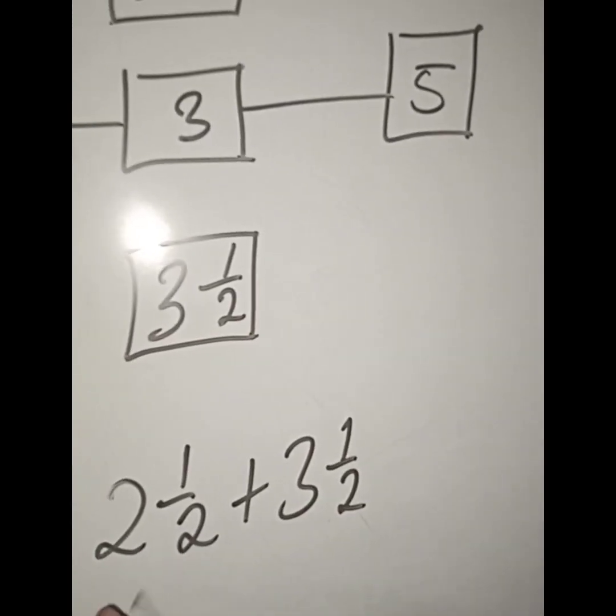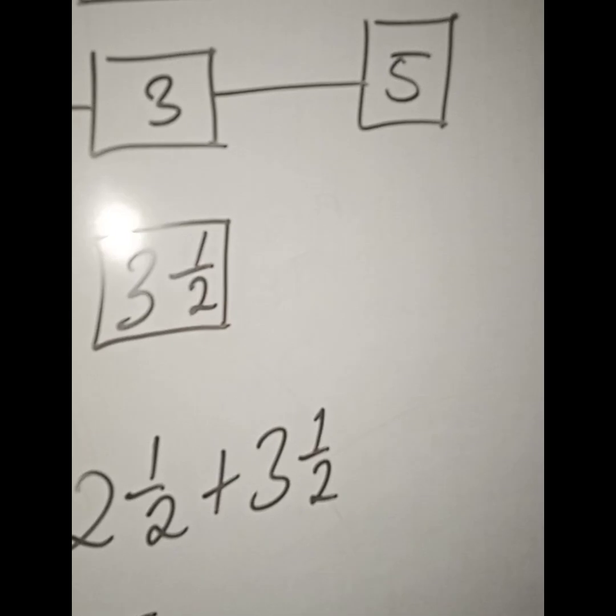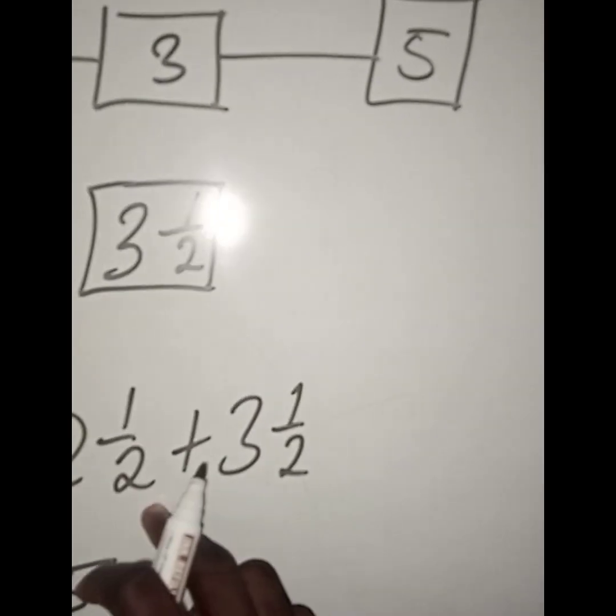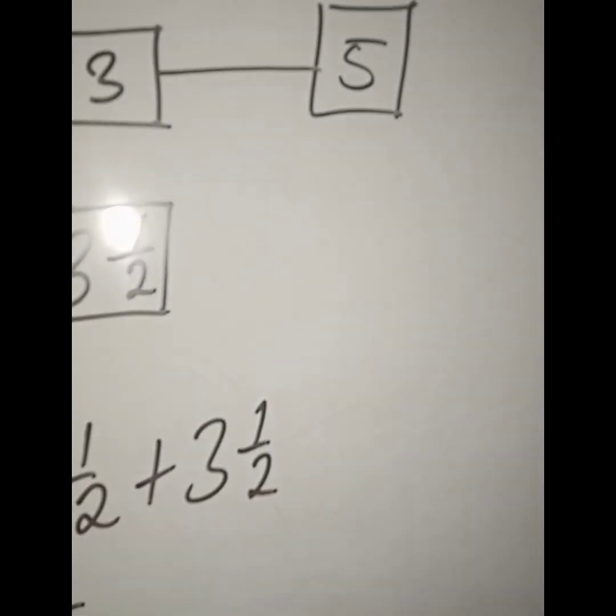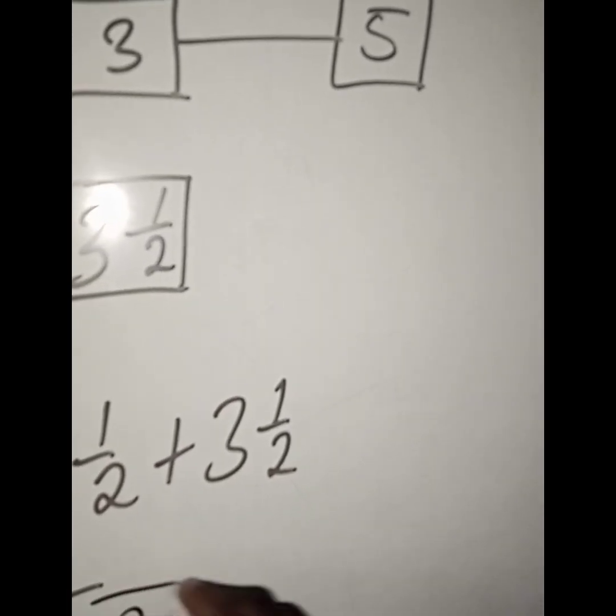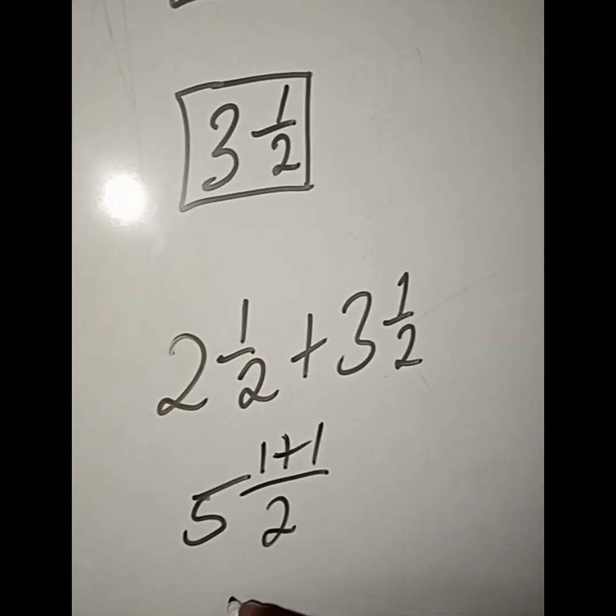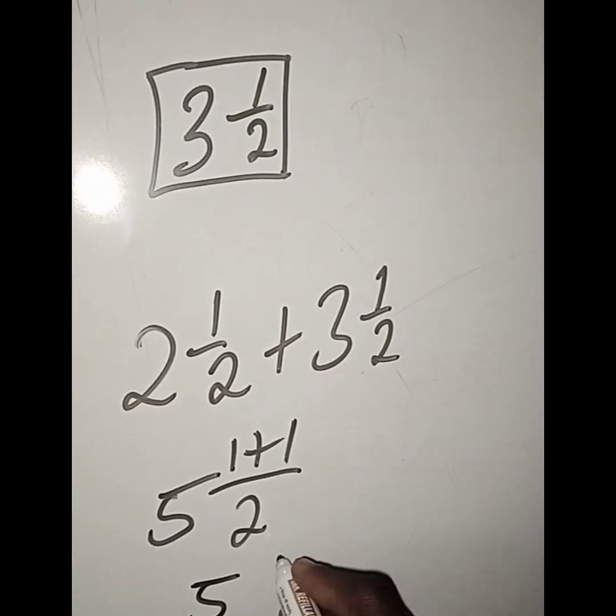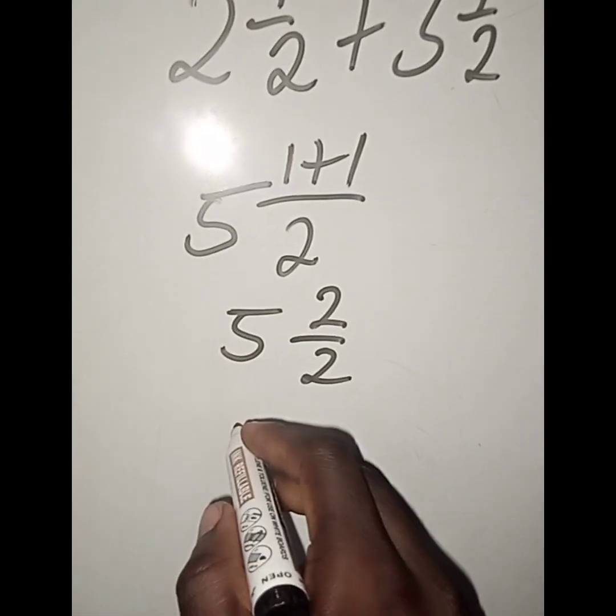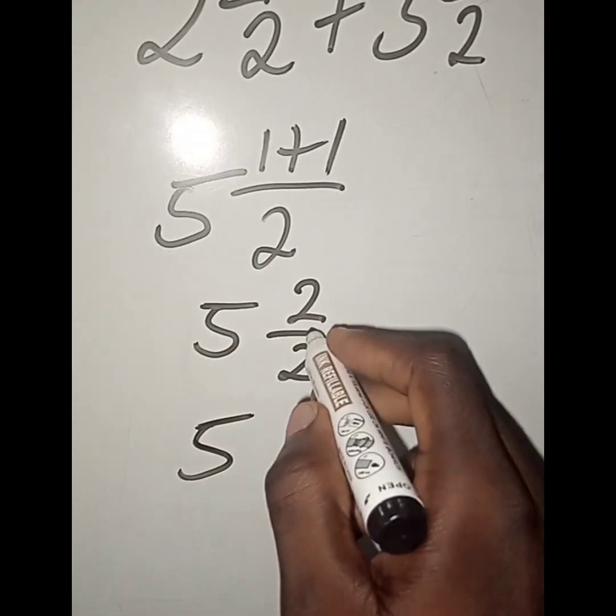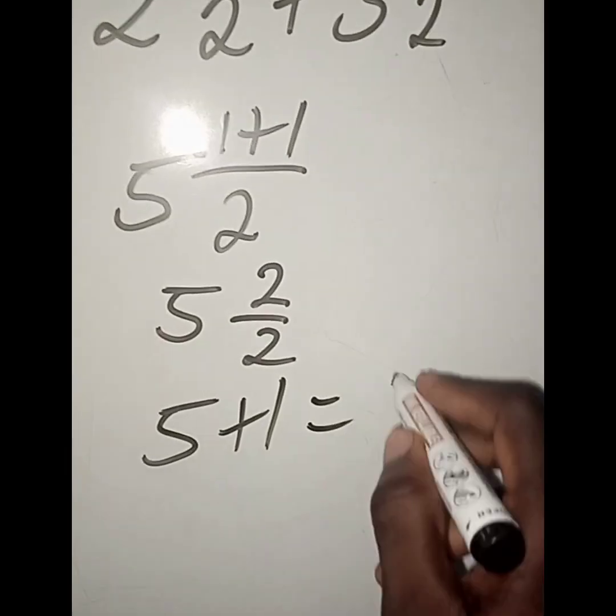First, we add the whole numbers. 2 plus 3 will give us 5. Then, we pick the denominator here. Since the denominators are equal, we pick 1, that is 2. Then we add the numerators, 1 plus 1. So we're having 5 and 2/2. 5 and 2/2 means 2/2 is 1, so plus 1. This is equal to 6.